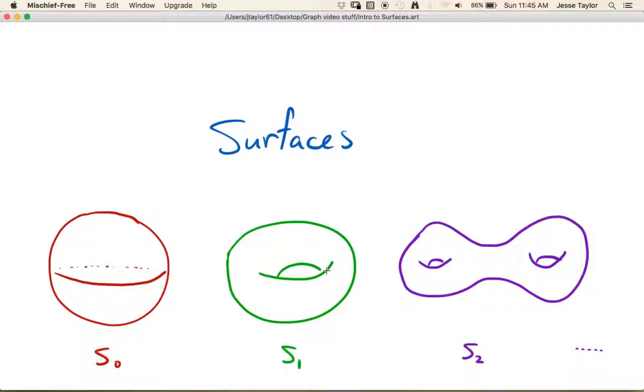And so it looks like a donut, there's a hole sort of going through the middle here. And then you go to S2, and this is the double torus, right? And you can have like the triple torus and so on. And the idea is you just keep adding holes to these things, right?